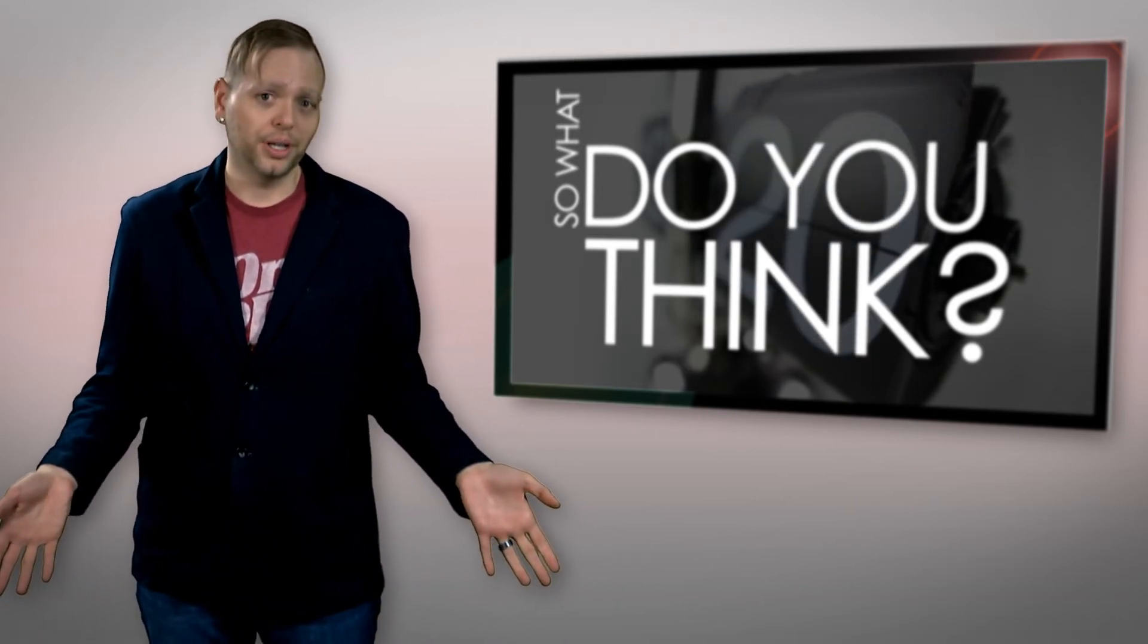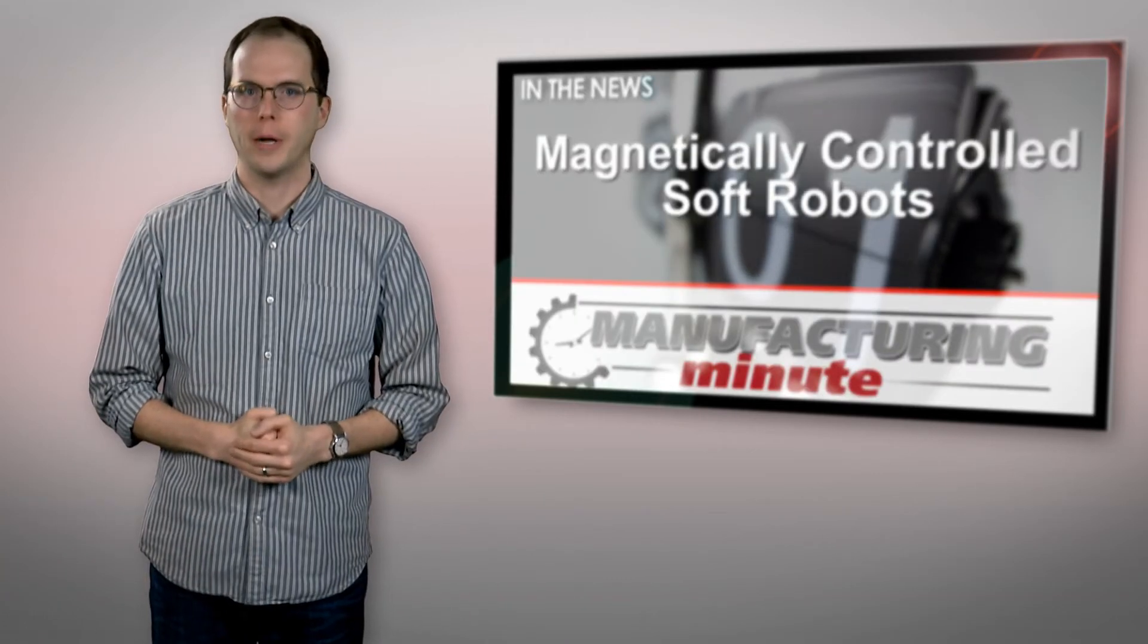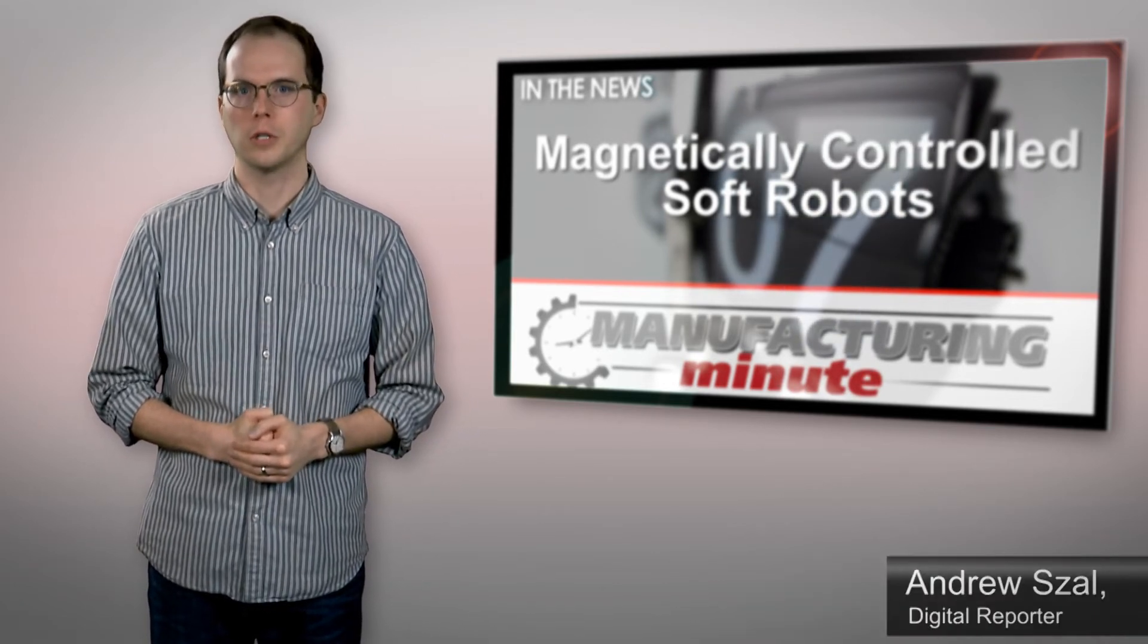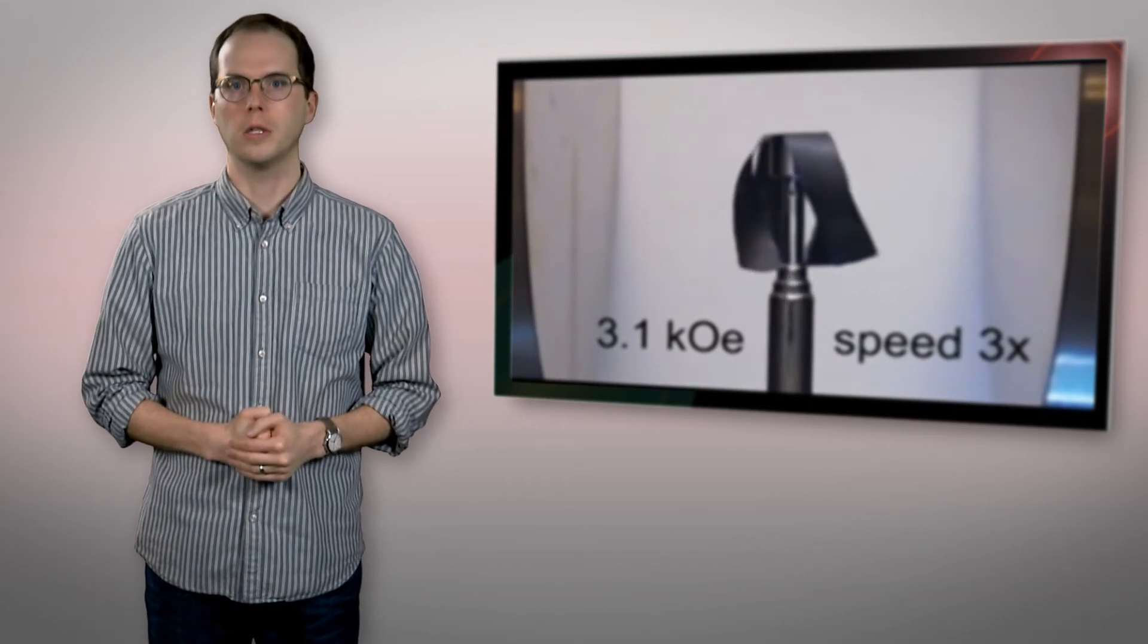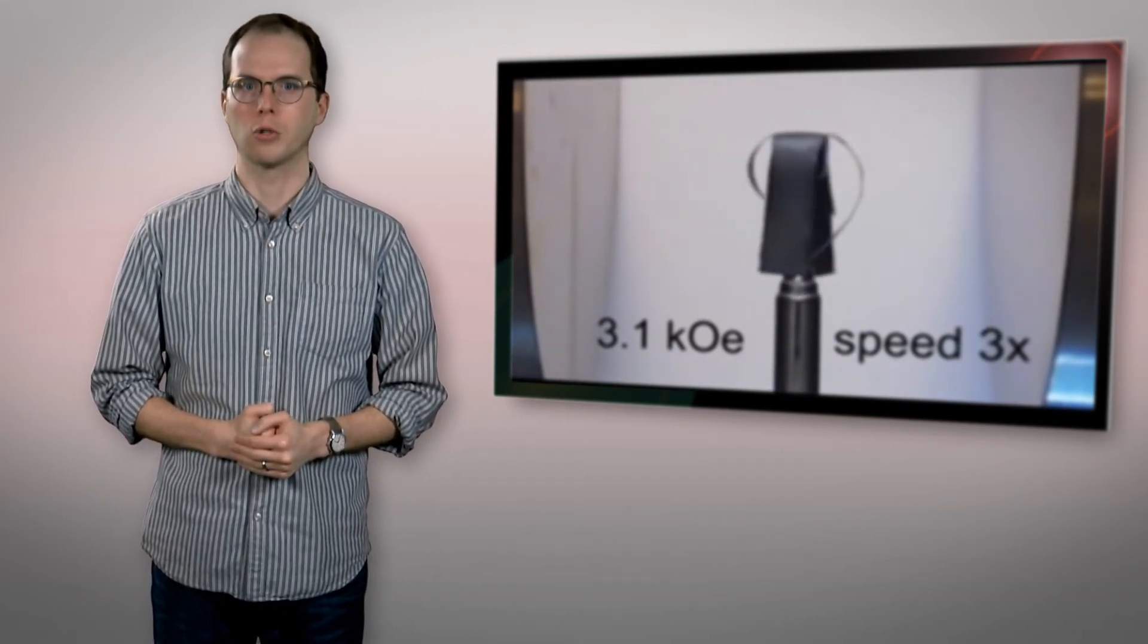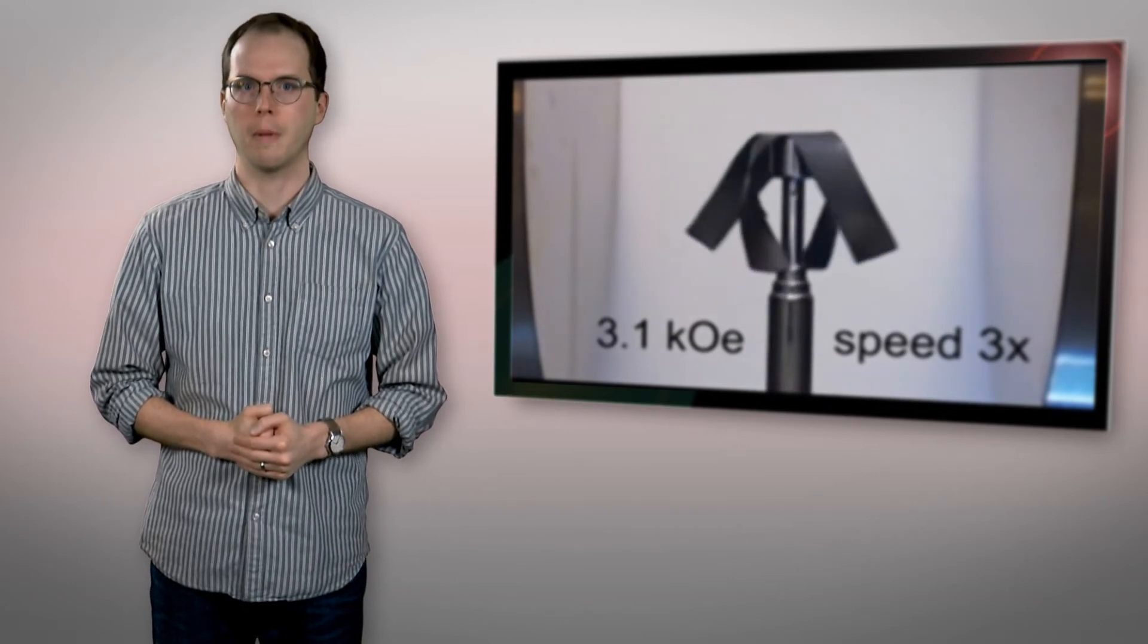Scientists believe that robots comprised of soft, stretchy materials could complement humans even more than conventional devices made of metal or plastic. This week, engineers from North Carolina State University detailed a potentially breakthrough method for controlling these soft robots by manipulating magnetic fields.